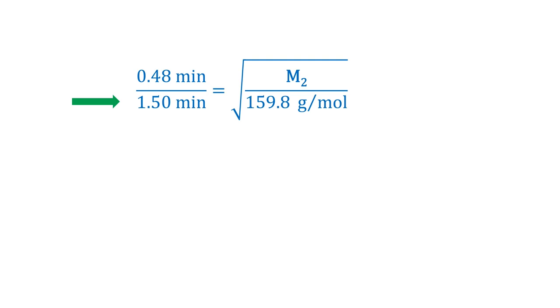The unknown rate will be in the denominator on the left side, and the bromine data goes here. Since I'm not using the gas law constant R, I can use units of grams per mole for the molar mass.